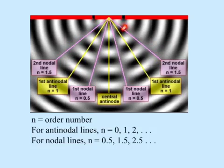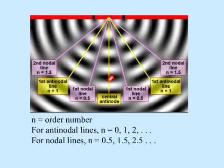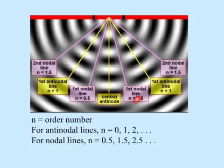Here is a picture of the interference pattern of water waves from two point sources. There are lines of constructive interference and also lines of destructive interference. Along one line you can see big crests and big troughs; along another line there is calm water. A number is assigned to each of these lines. The center one has an order number of zero, then there is order number one-half, one, and one and a half. Where there are whole numbers, there is constructive interference; where there is a half, like one-half and one and a half, there is destructive interference.